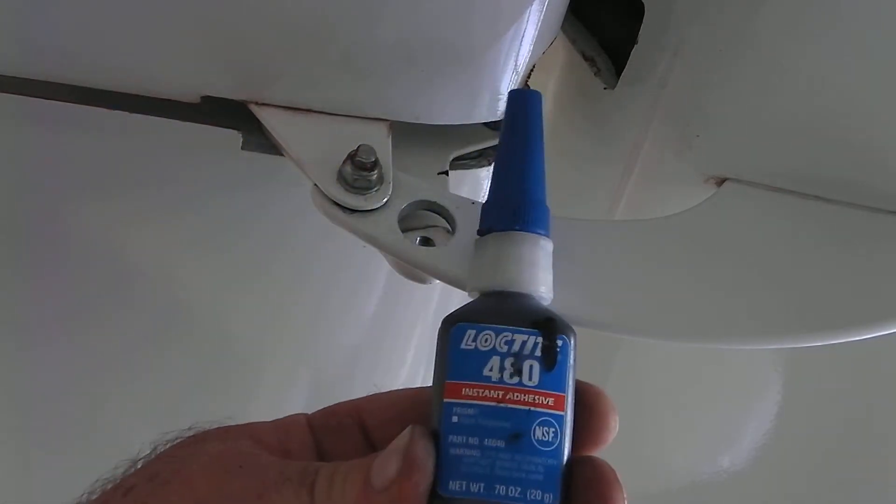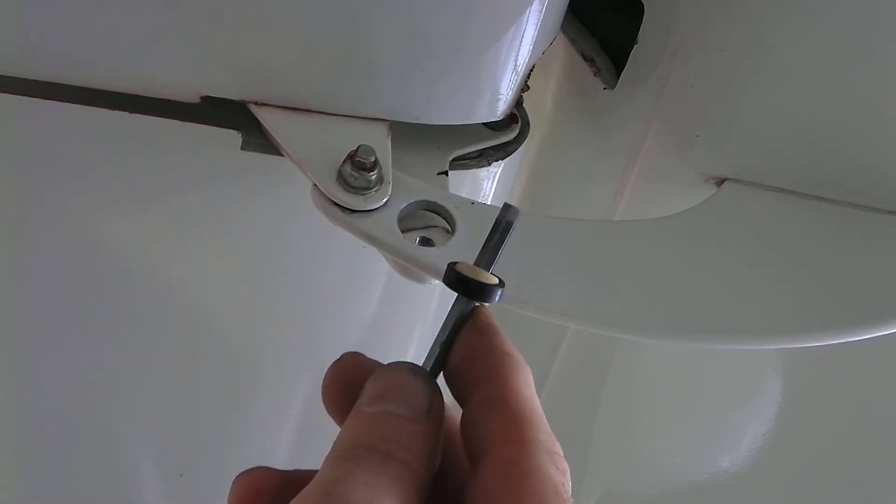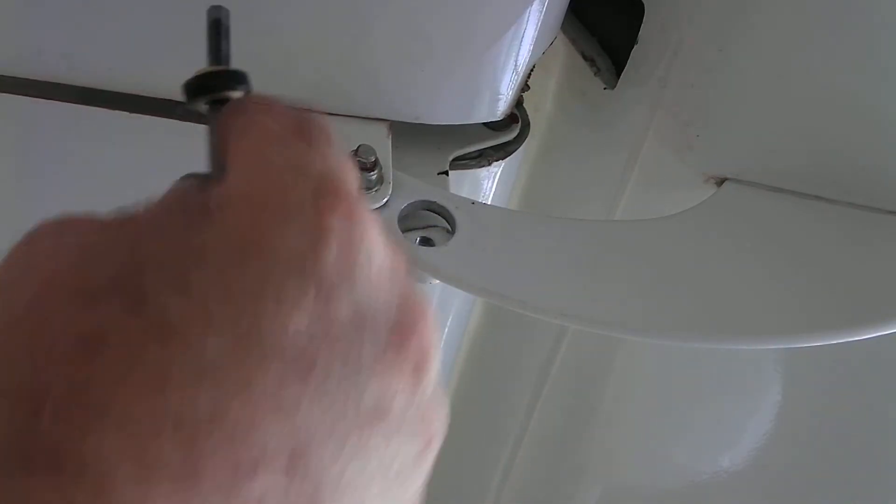Then we're going to take this Loctite 480 and apply it right around the edges of this black bearing. As soon as we do that, you'll take this and just press that back into place.